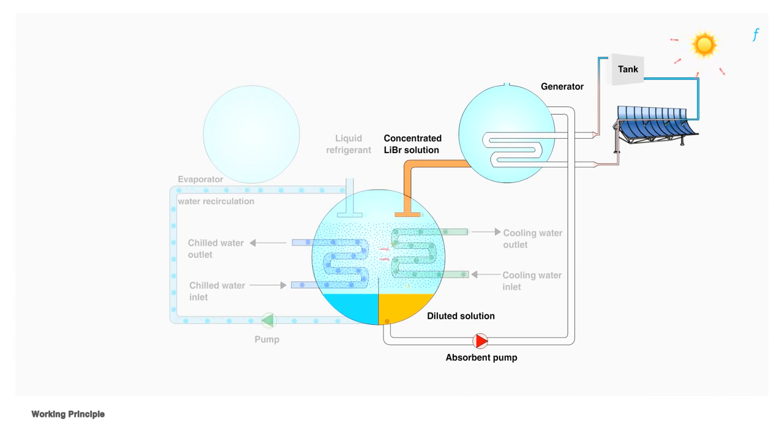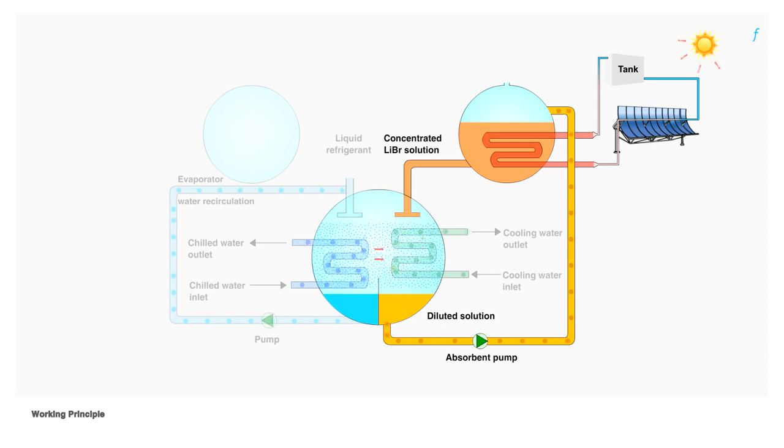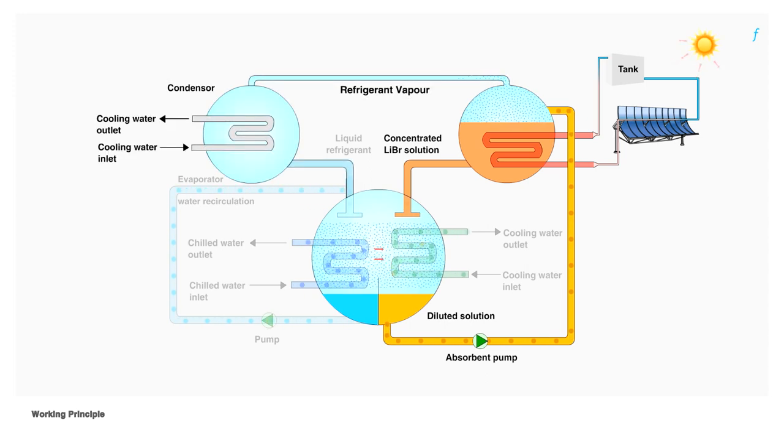The next element in this cycle is the generator. The diluted lithium bromide solution is pumped up to the generator for re-concentration. Here, an external heat source, that is heat from the solar collectors, is used to heat up the solution. The heating process vaporizes water from the solution, thereby increasing the concentration of lithium bromide. The re-concentrated lithium bromide solution is directed to enter the absorber unit, forming a cycle of its own.